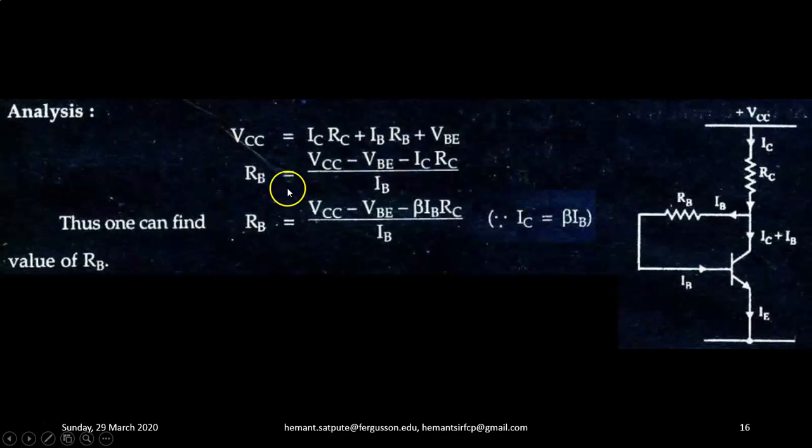Rearrange this equation to get IB equals VCC minus VBE minus IC RC upon RB. One can also write using IC equals beta times IB, RB equals VCC minus VBE minus beta times IB into RC upon IB. Using this equation, one can find value of RB.